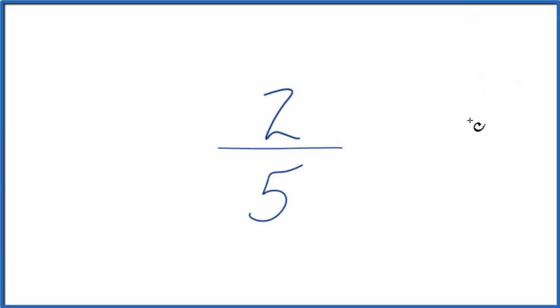If you need to find equivalent ratios for the fraction two-fifths, here's how you do it. Equivalent ratios are also called equivalent fractions, and here's how you find them. We want to find another fraction that's equal to 2 divided by 5. It has the same value, it's just represented differently.